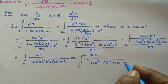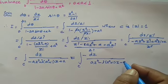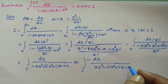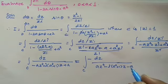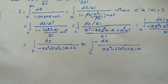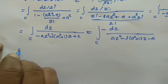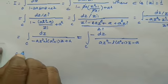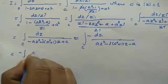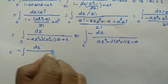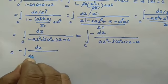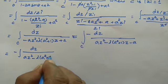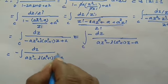In the quadratic equation, we need to solve for z. The integral becomes minus the integral of dz divided by a squared, minus i times (a squared plus 1) times z minus a.